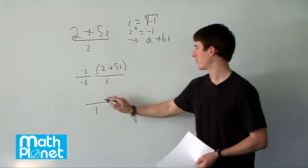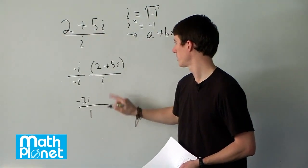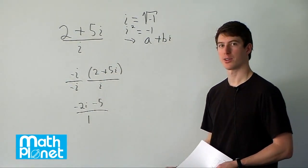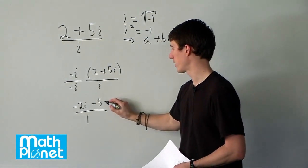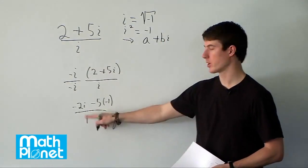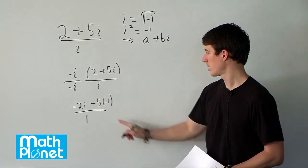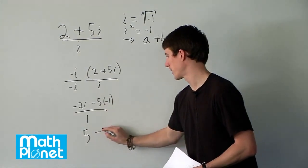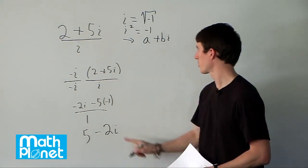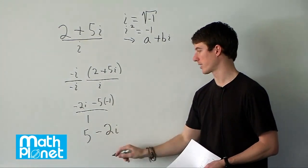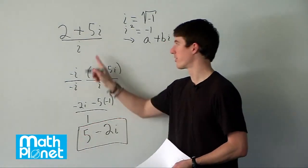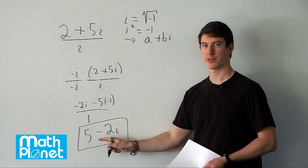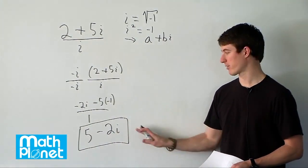In the numerator, we have negative 2i, and then we have minus 5 times i squared. Since i squared is negative 1, we have a negative 1 here. So we can simplify one more step — the denominator is just 1. We multiply negative 1 times 5 to get 5, and then we have minus 2i. So in this case, a equals 5 and b equals negative 2. This is the original expression written in the common form: a real number plus or minus another real number multiplied by i. That's the final answer.